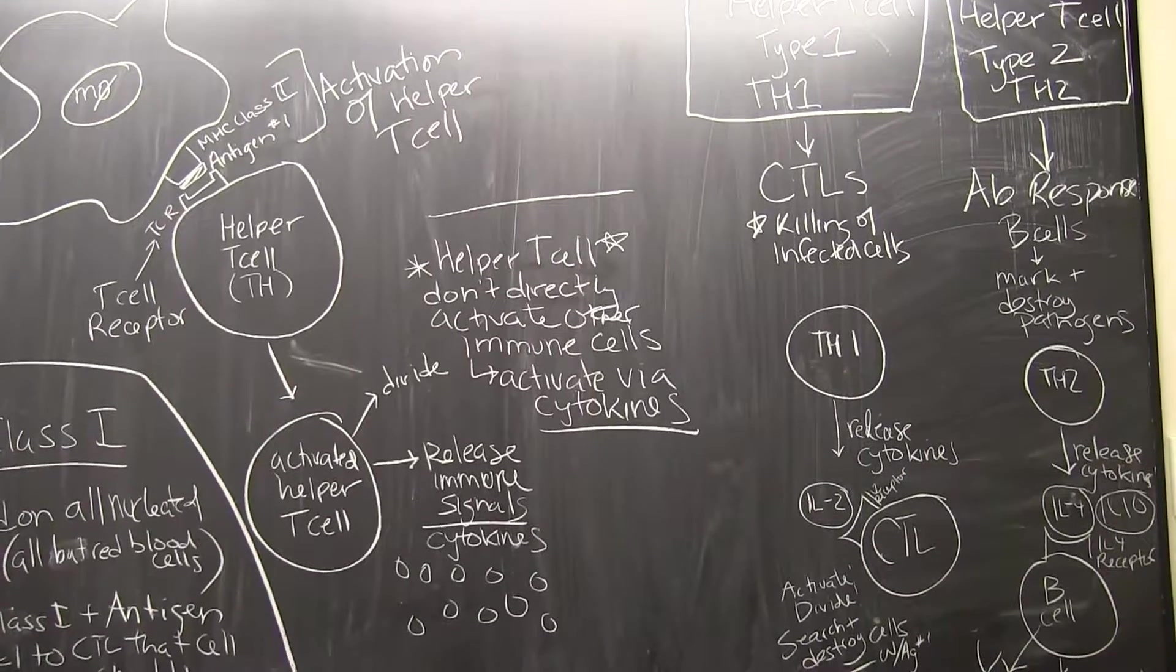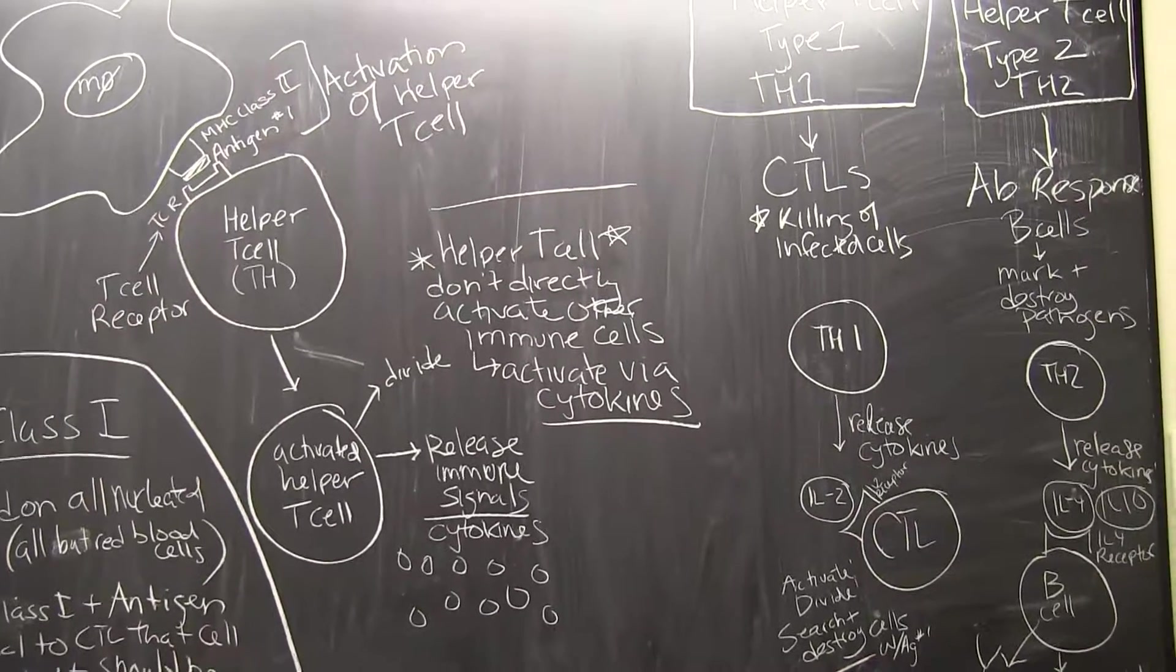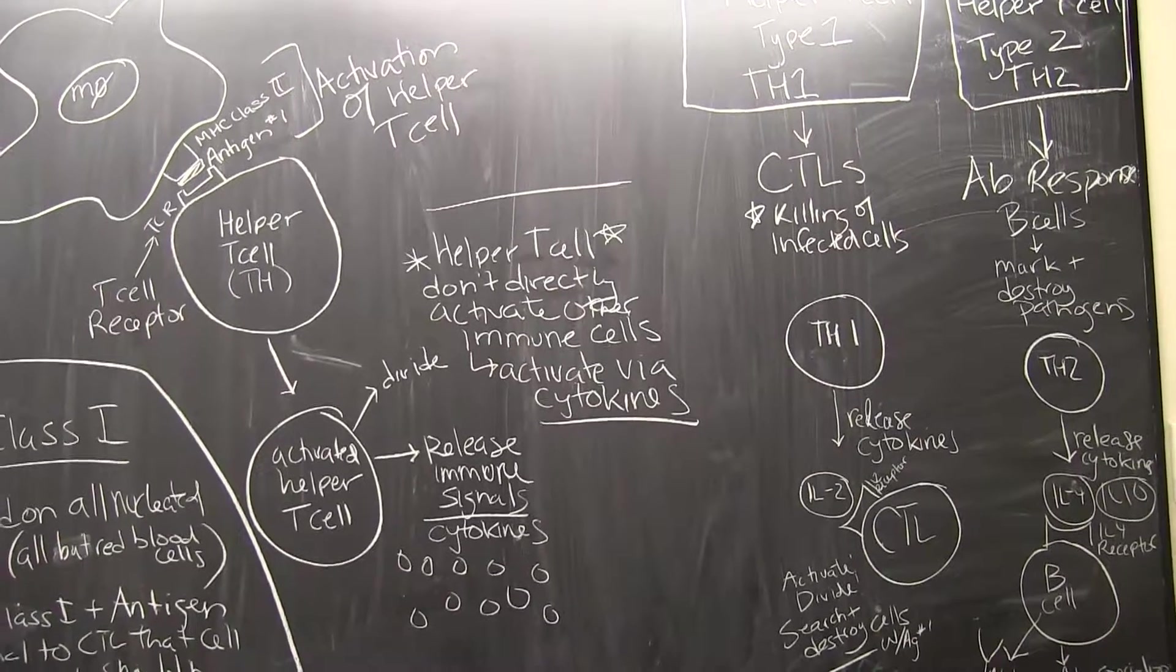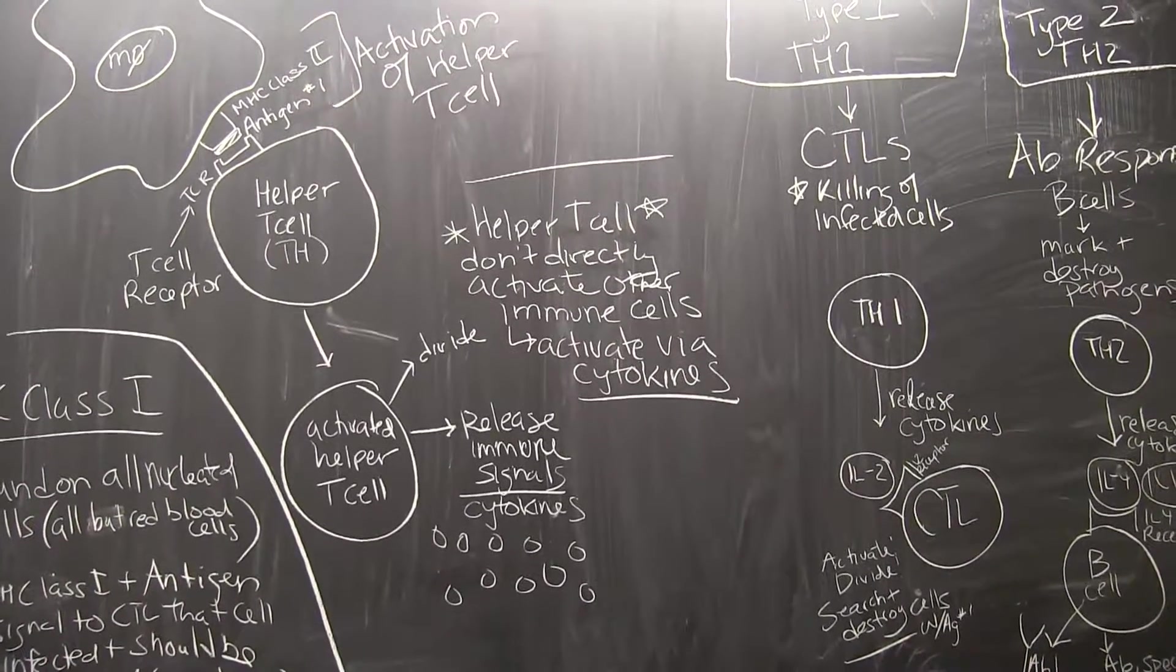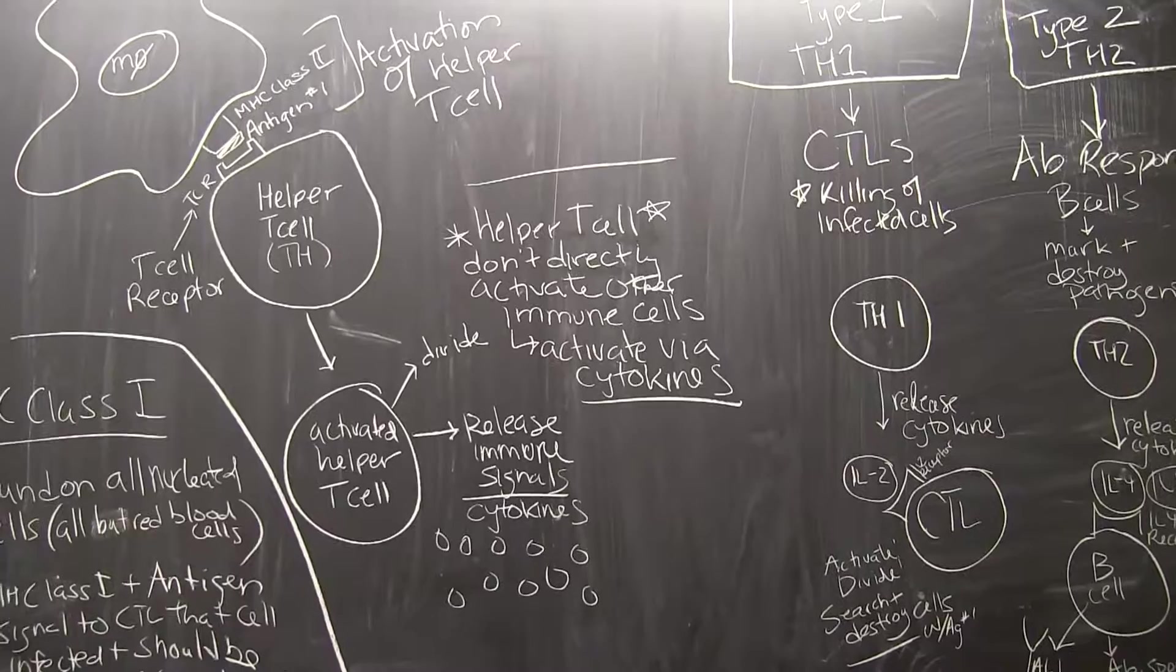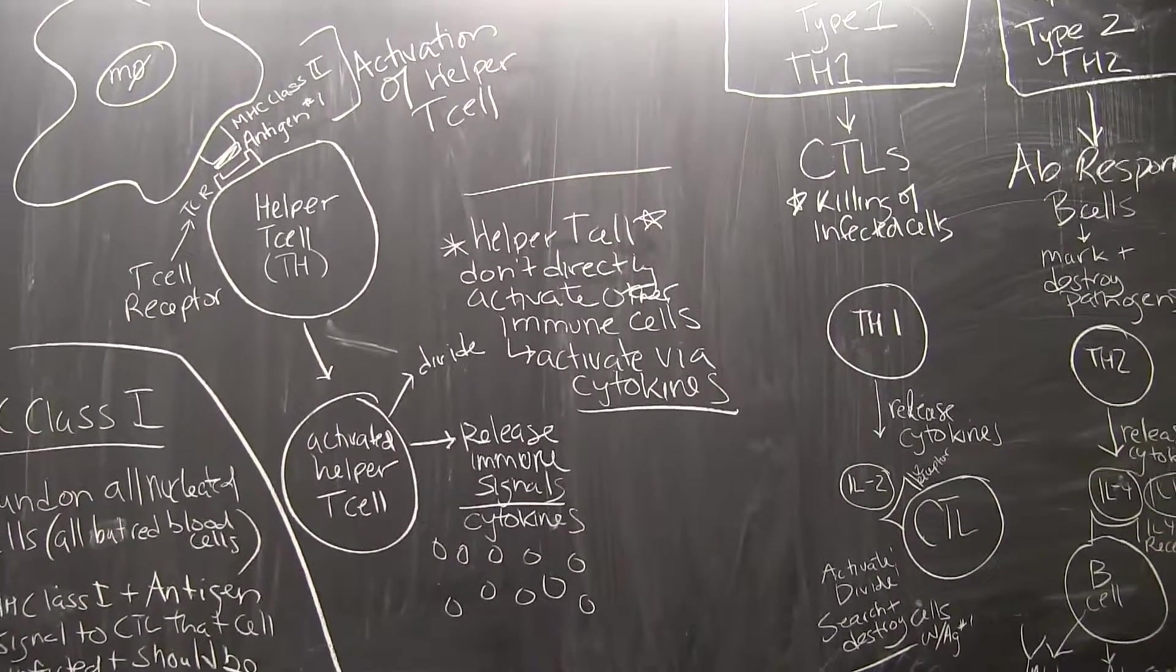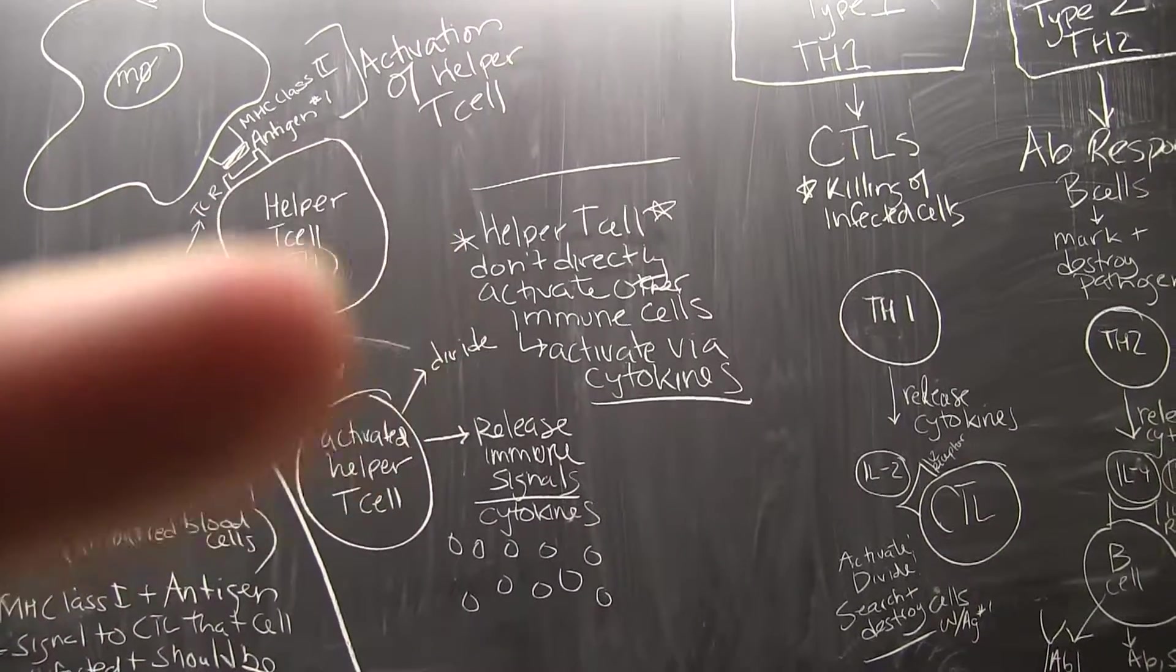We have cytokines that can suppress the immune response, cytokines that can promote B cells and antibodies, and cytokines that can promote the killing of infected cells via the killer T cells.